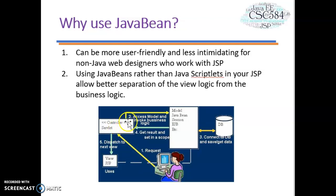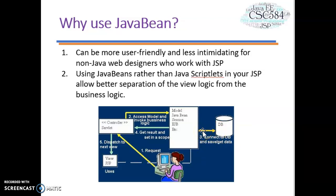The server will send the request to the model, access the model, and invoke the business logic. Third, it will connect to the database and save or get the data. When the database responds back to the model, it will send the result and set it in scope for the controller, then it will be dispatched to the next view with the JSP.